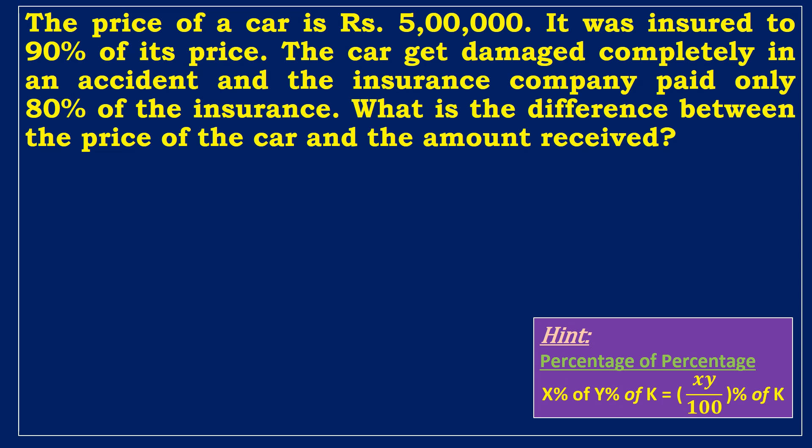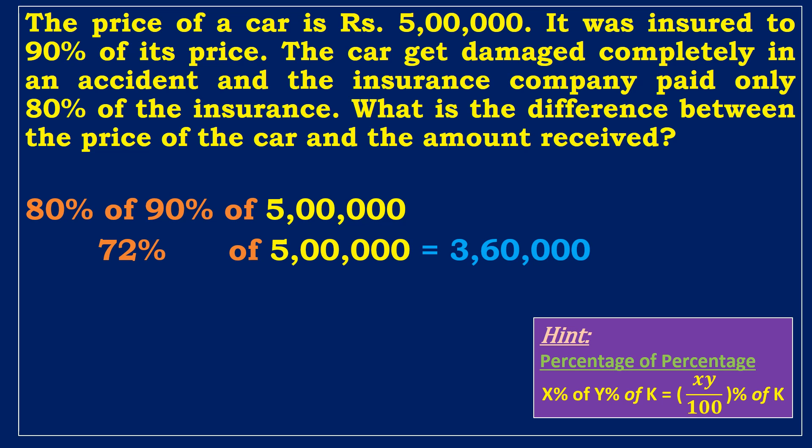Second example, the price of a car is Rupees 500,000. It was insured to 90% of its price. The car got damaged completely in an accident, and the insurance company paid only 80% of the insurance. What is the difference between the price of the car and the amount received? We can solve this problem using the percentage of percentage concept. 80% of 90% is equal to 72%. As a result, 72% of 500,000 rupees is equal to 360,000 rupees. The difference between 500,000 and 360,000 is 140,000 rupees.